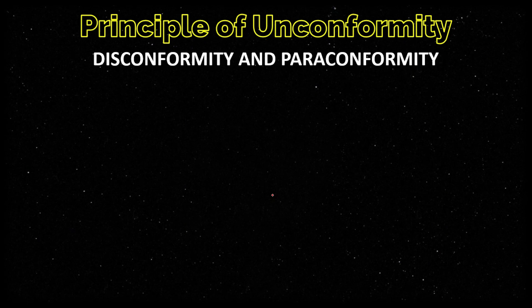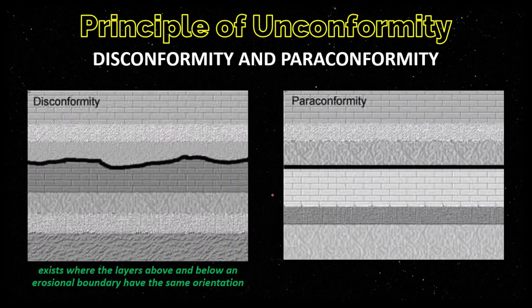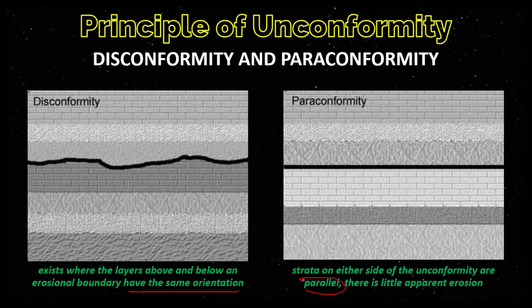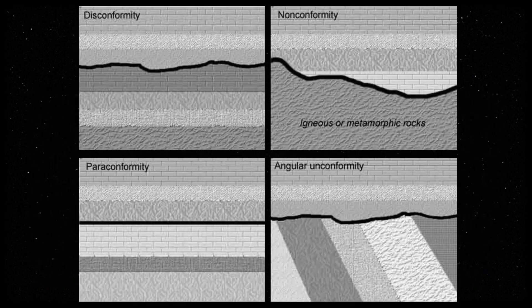Now let's talk about disconformity and paraconformity. Disconformity exists where the layers above and below an erosional boundary have the same orientation — keyword: same orientation. On the other hand, in paraconformity, the strata or beds are parallel to each other, and there is no discernible erosional surface. However, there is a gap in the ages between the rock units. A paraconformity represents a period of non-deposition. This slide summarizes the four unconformities so you can notice the differences between them.